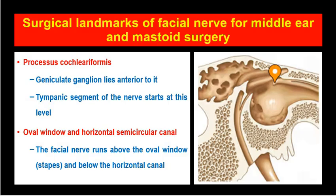The first and most important landmark during middle ear surgery and mastoid surgery is the processus cochleariformis, which is a spoon-shaped bone in the roof of the middle ear cavity. The geniculate ganglion lies anterior and superior to it. This is the geniculate ganglion of the facial nerve. The facial nerve takes its first genu from here. Therefore, if you look for the processus cochleariformis, you will be safe with regard to the facial nerve course.